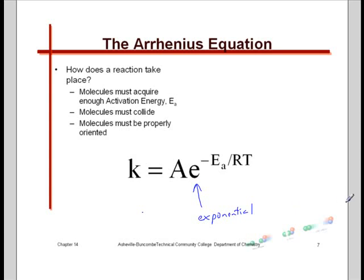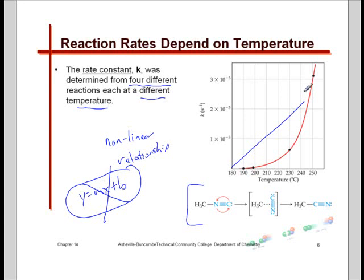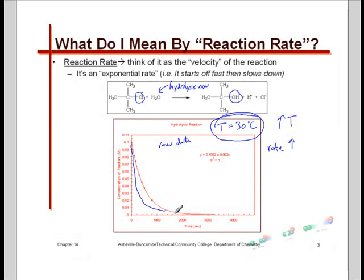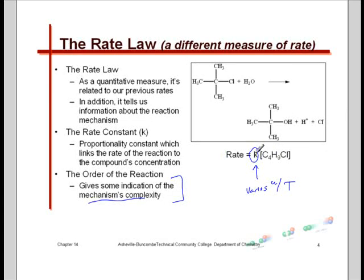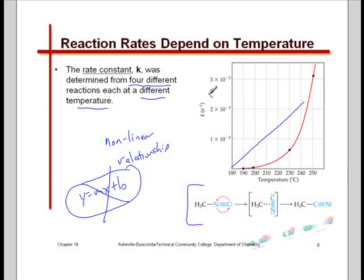Looking at the expression, there is e raised to something — an exponential function — which graphically shows a steep ascent or descent, a very rapid transition, a nonlinear relationship. Now, what are the components? K is the rate constant — just like we've seen before, it's the Y data plotted on the graph. Temperature we know. R is the gas constant from the gas law chapter — for this semester the value we use is 8.314 joules per kelvin per mole.